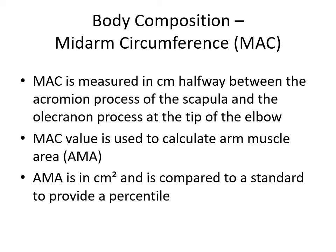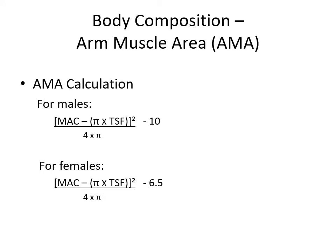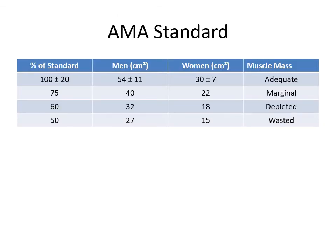Mid-arm circumference is measured in centimeters halfway between the acromion process of the scapula and the olecranon process at the tip of the elbow. Mid-arm circumference values are used to calculate arm muscle area in centimeters squared, which is compared to a standard to provide a percentile indicating how much muscle the patient has compared to others in that grouping. Categories include adequate muscle, marginal, depleted, or wasted.